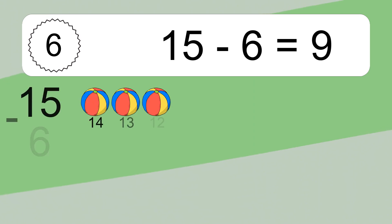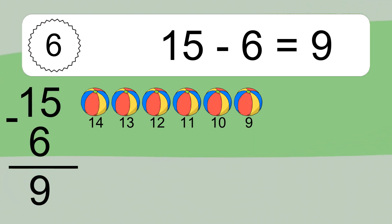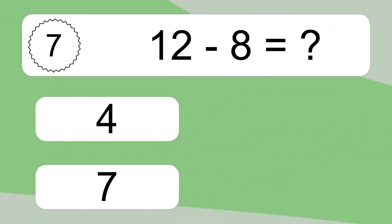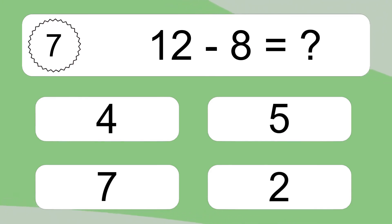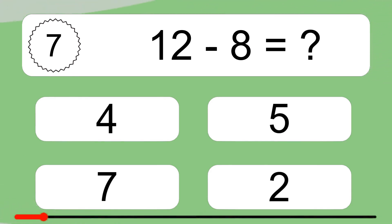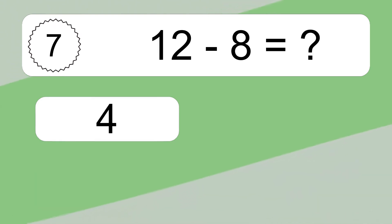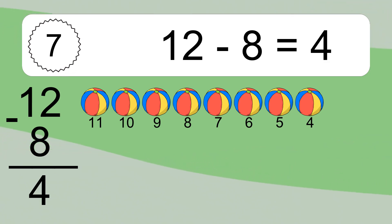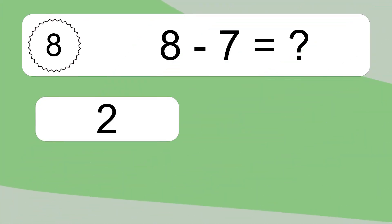15 minus 6 equals what? 15 minus 6 equals 9. Let's count it: 14, 13, 12, 11, 10, 9. 12 minus 8 equals what? 12 minus 8 equals 4. Let's count it: 11, 10, 9, 8, 7, 6, 5, 4. 8 minus 7 equals what?